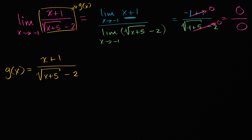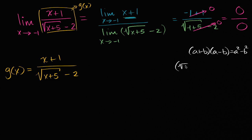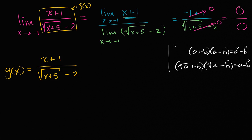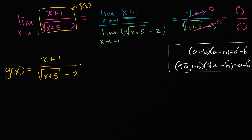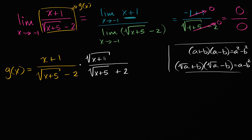We'll leverage our knowledge of difference of squares: a plus b times a minus b equals a squared minus b squared. Since we have the square root of x plus five minus two in the denominator, we multiply both numerator and denominator by the square root of x plus five plus two. We're multiplying by one — dividing an expression by itself — so we don't change the value.